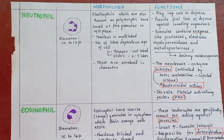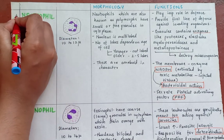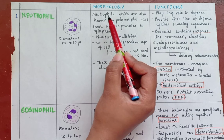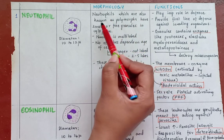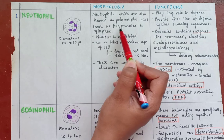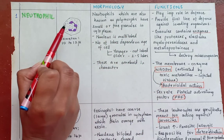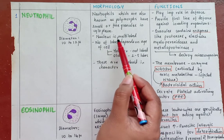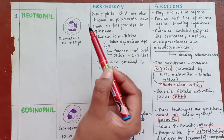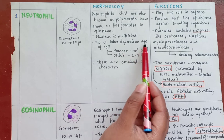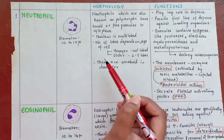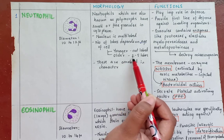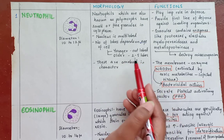First one: the neutrophil. Neutrophils, which are also known as polymorphs, have small or fine granules in the cytoplasm. As you can see in the diagram, fine granules are seen in the neutrophil. The nucleus is multi-lobed and the number of lobes depends on the age of the cell — in younger cells it is not lobed, and in older cells you see 2 to 5 lobes.